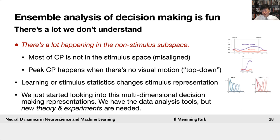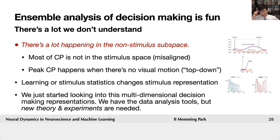We still don't fully understand what is going on. All I can tell you is that this ensemble analysis of decision-making is very exciting. There's a lot happening in the non-stimulus subspace that prior theories have not explored. CP in MT is mostly in the non-stimulus space — they're misaligned — and the peak happens when there's no visual motion, suggesting some sort of top-down signal. As learning happened, the stimulus representation was changing over time. We have the data analysis tools to get this information, but right now we need more theory, more hypothesis, and critically more experiments to verify. That's the end of part one.